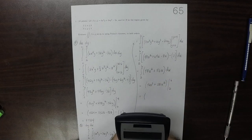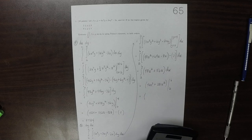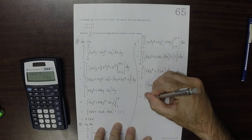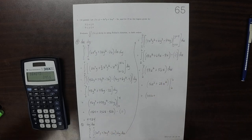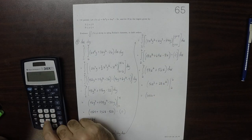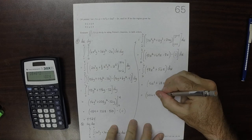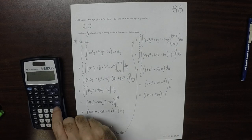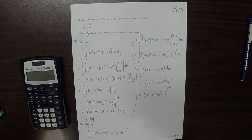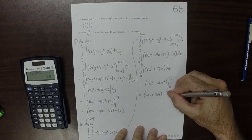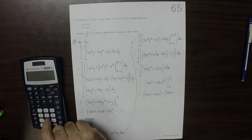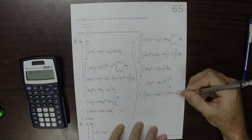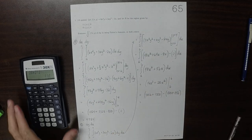So 16 times 6 cubed is 3456, plus 28 times 6 squared is 1008, minus 16 times 2 cubed, 128, plus 28 times 2 squared, 112. So plugging all of that into the calculator, we get 3456 plus 1008 minus 128 minus 112.